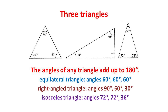The result says that the angles of any triangle in the plane add up to 180 degrees. For example, here are three triangles where this is the case. The first is an equilateral triangle where all of the angles are 60 degrees. The second is a right-angled triangle where one angle is 90 degrees and the others are 60 degrees and 30 degrees. The third is an isosceles triangle where two of the sides and also two of the angles are the same — this one has angles 72 degrees, 72 degrees, and 36 degrees.